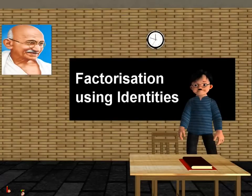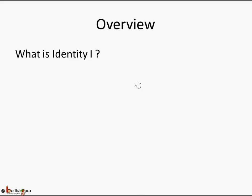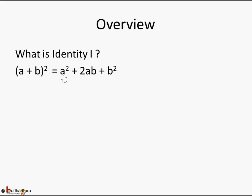Hello children. In this lesson we are going to learn how to do factorization of algebraic expressions using identity. First let's revise what is Identity 1. As we have seen in the chapter of algebraic expressions, (a + b)² can be represented as a² + 2ab + b². The left-hand side is equal to the right-hand side — this is what we learned in the algebraic expressions lesson.